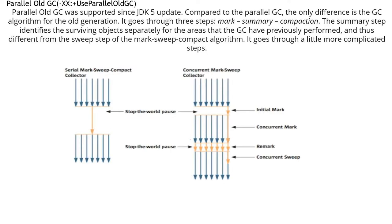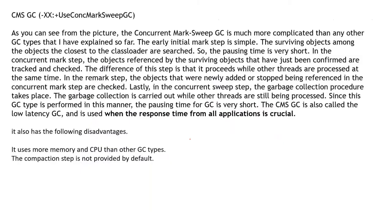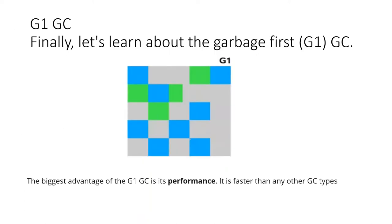We discussed CMS and how mark, sweep, and compact happens in CMS, and how it is different from mark-sweep-compact in other GCs. We also saw how G1 GC algorithm works. G1 GC is not yet fully stable — Oracle and the Java team are trying to stabilize it to make it an industry standard because it gives both the performance of CMS and the throughput of parallel GC, making it a better algorithm for the future. G1 GC distributes your heap into section segments and checks if objects in a particular segment are unreferenced, collecting those objects.